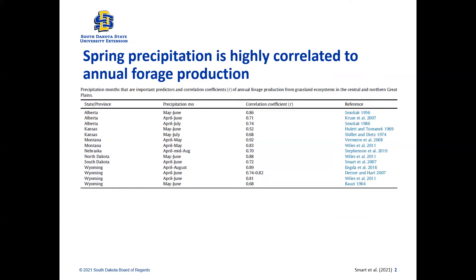From published studies in the literature, we can look at the vast majority of states, especially in the Great Plains and especially the Northern Great Plains. We see that the months of April, May, and June are really important in terms of predicting annual forage production.